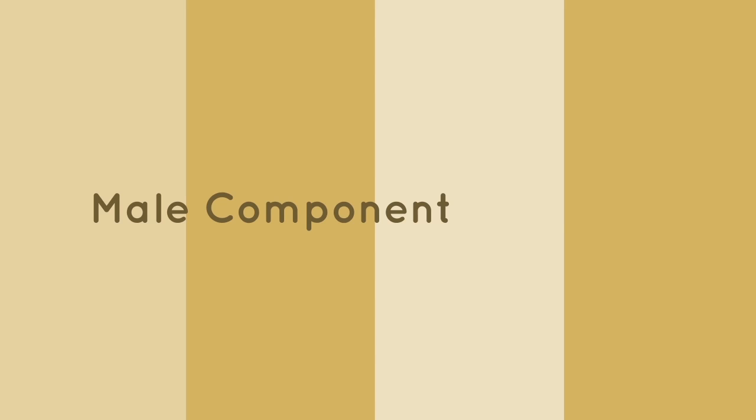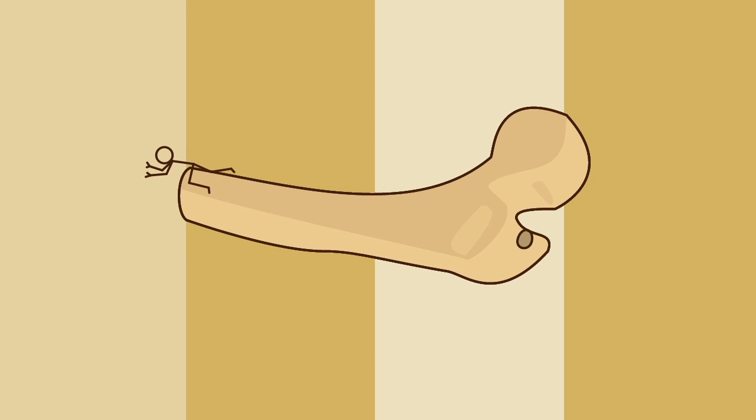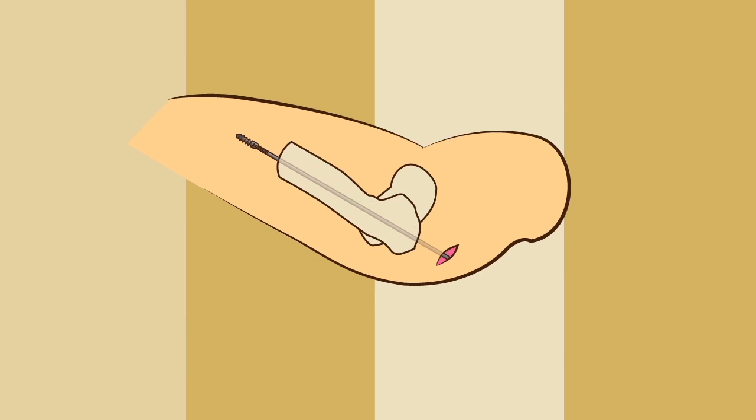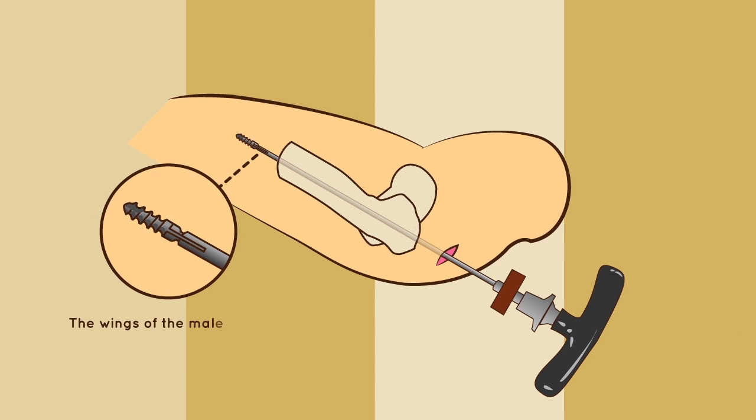Male component assembly. The male component is inserted retrograde from the osteotomy through the proximal fragment. An incision is made at the buttock to allow the extremity of the implant to exit proximally. The male driver is then introduced over the male component. The wings of the male solid nail are fitted into the male driver slot.